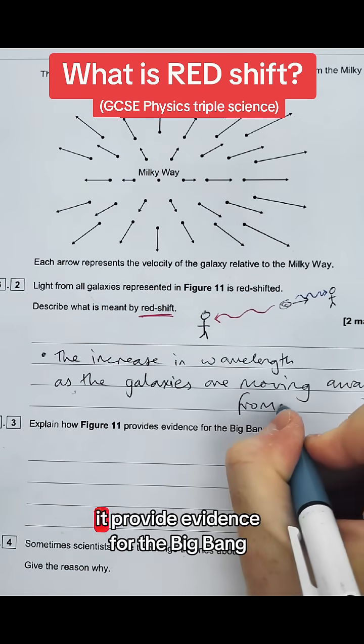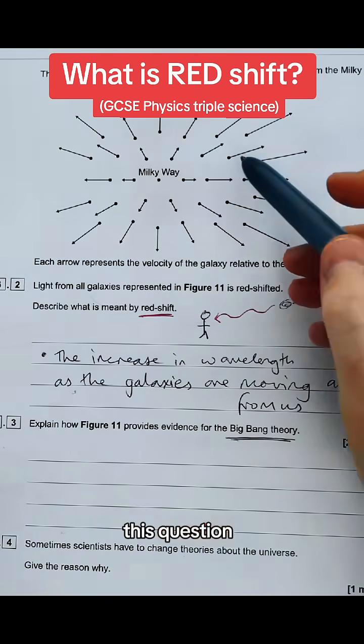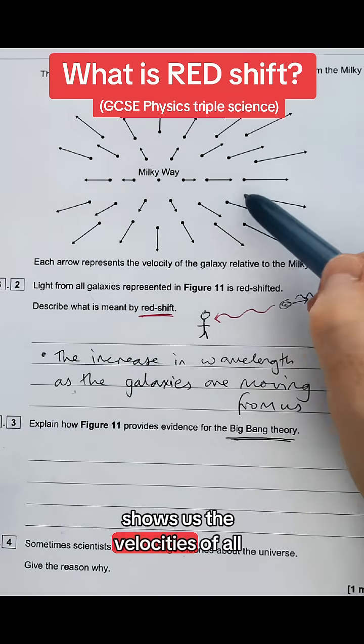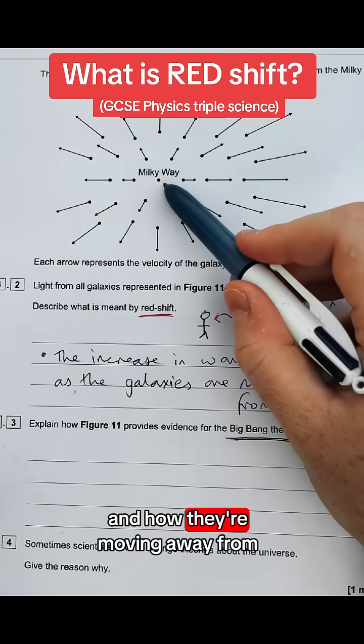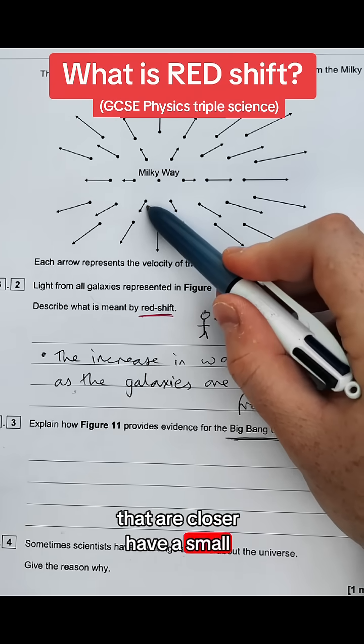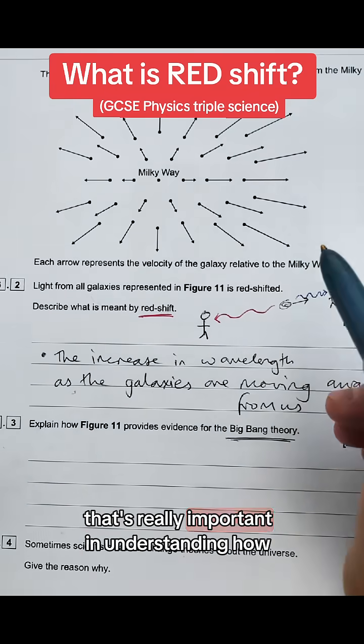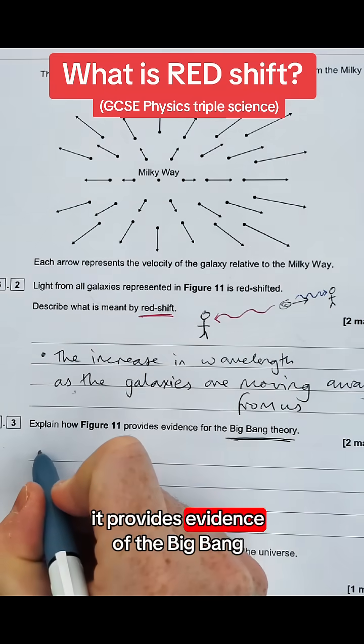The next question is how does it provide evidence for the Big Bang Theory? Now we've got a clue in this question because it actually shows us the velocities of all these different galaxies and how they're moving away from our galaxy, the Milky Way. Notice the ones that are closer have a small arrow, the ones that are further away have larger arrows. That's really important into understanding how it provides evidence for the Big Bang.